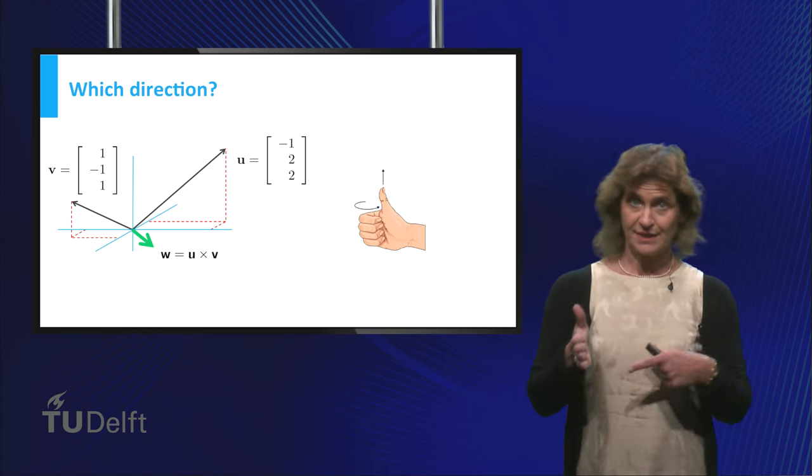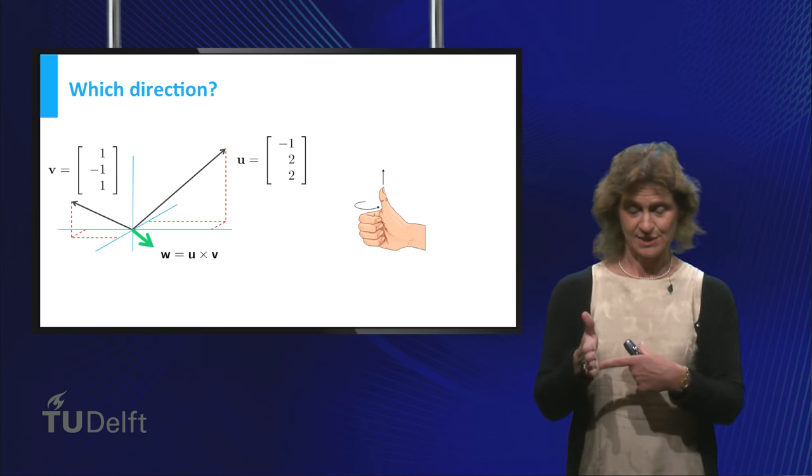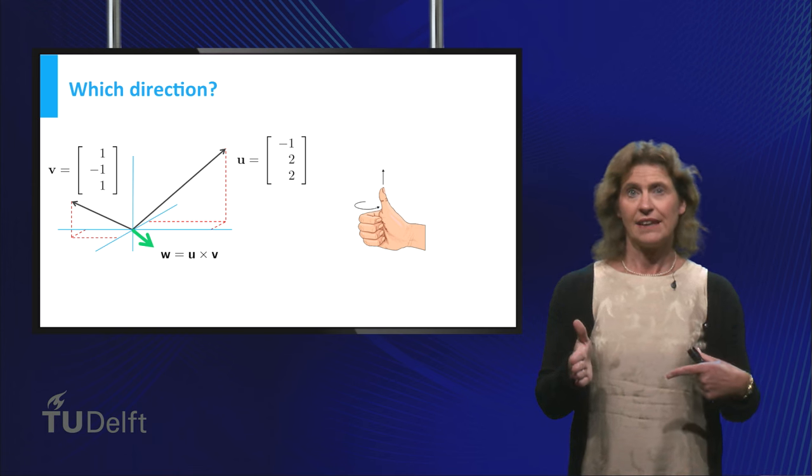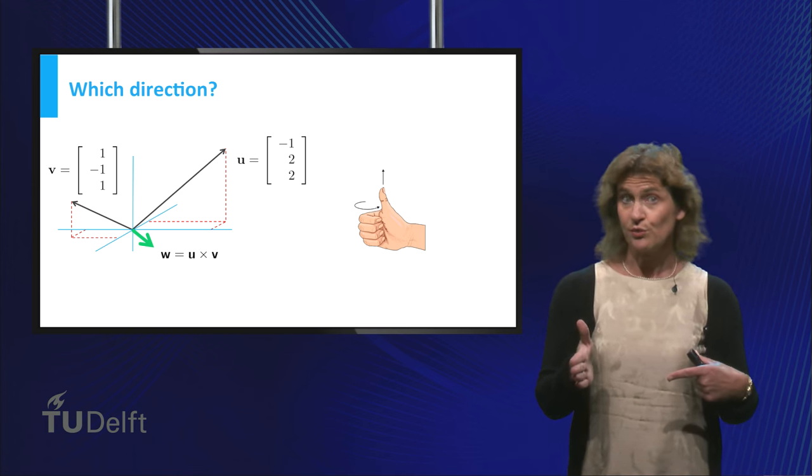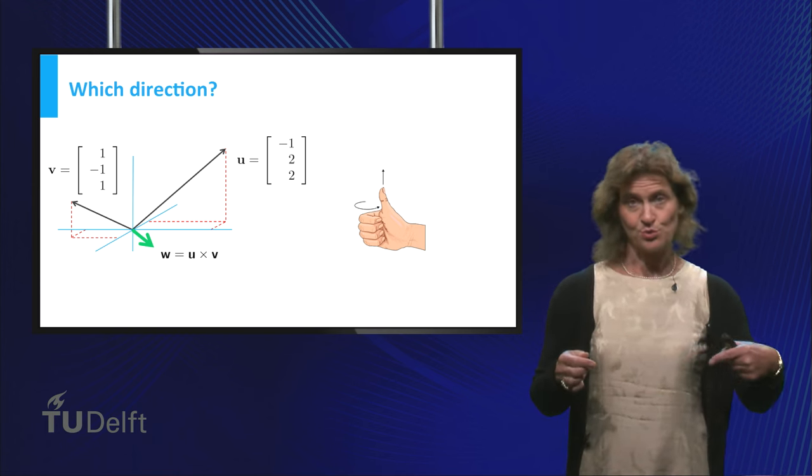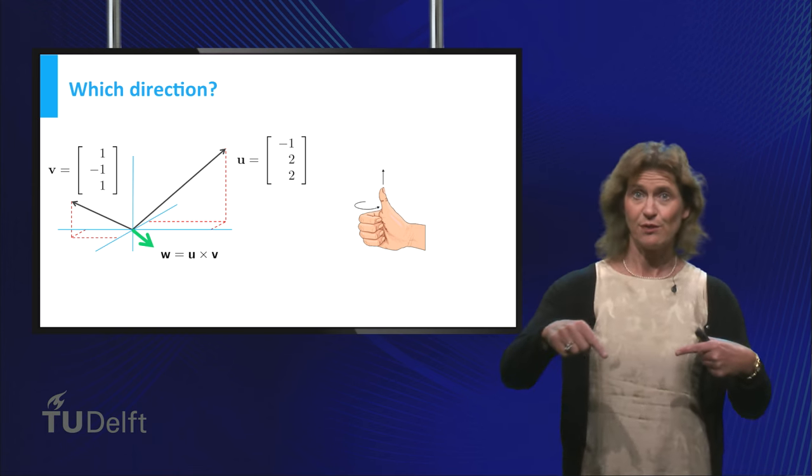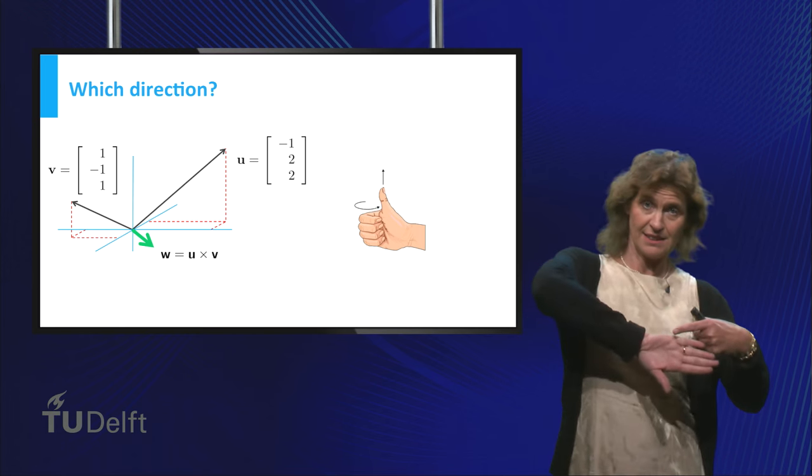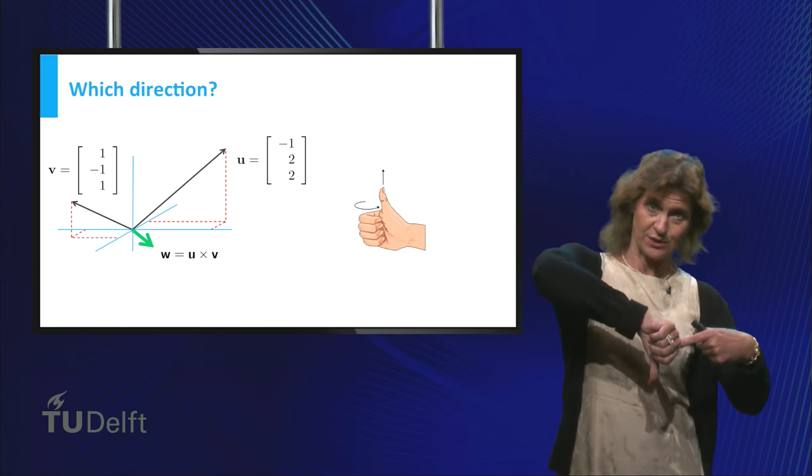So, if this is u and this is v, then the direction of the vector you are looking for is this way. But if this is u and this is v, I have to put my hand like this, and you see that the vector points downwards.